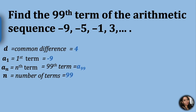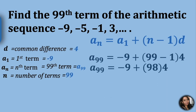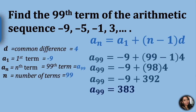Since we already have the given, we now write our formula and substitute. So we have a sub 99 equals negative 9 plus the quantity 99 minus 1, times 4. Solve first what is inside the parenthesis: 99 minus 1 is 98. Remember our rule in the order of operations: multiplication first before addition. So 4 times 98 is 392. Then we add our negative 9, and our a sub 99 is 383.